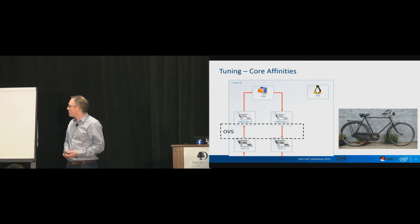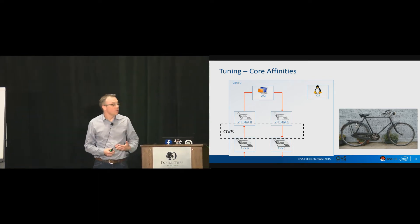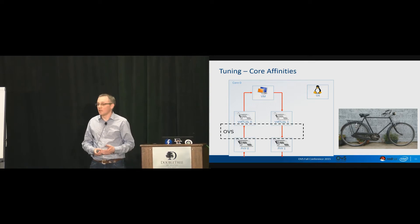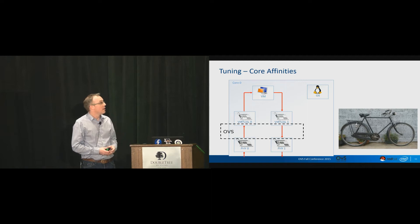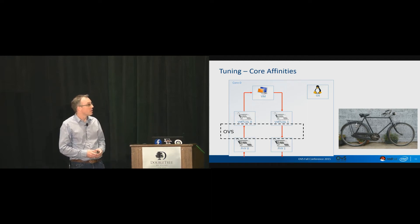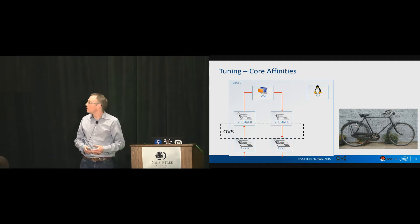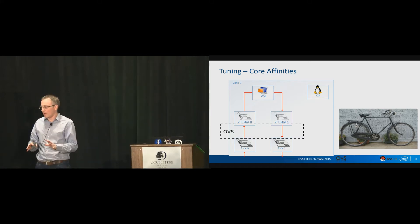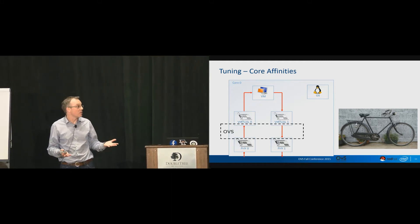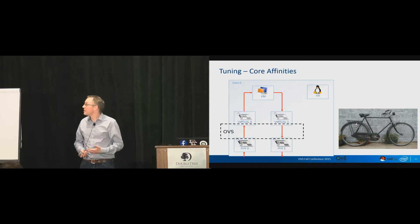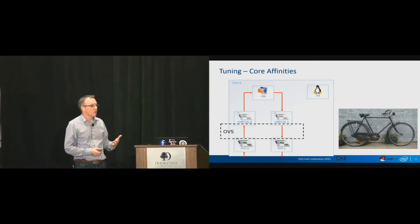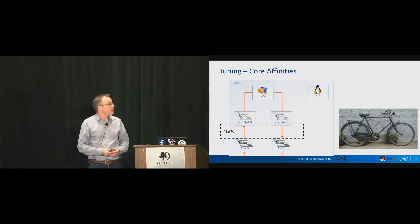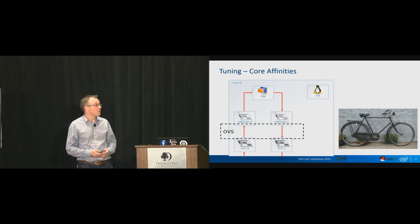If we take an example of traffic coming in on a physical NIC going into OVS with the DPDK data path: the poll mode driver will receive the packets, do a lookup, figure out where they need to go, and transmit them up into a VM. A common thing that happens is people just run completely out of the box, and there's a lot of contention for something like core zero — operating system tasks, VCPUs from guests, and all the switching trying to poll four ports. The result is you can't keep up with packets coming in on the physical NIC, and you end up overflowing your queues and dropping packets.